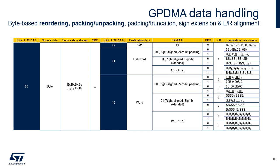This table lists the possible data handling from the source to the destination when the source data width is a byte. The source and destination data width of the programmed burst is byte, half word, or word, as per the SDW-Log2 and DDW-Log2 fields. The data handling that can be performed includes byte-based source reordering, data width conversion by packing, unpacking, padding, or truncation if the destination data width is different from the source data width, depending on the padding and alignment mode control field.